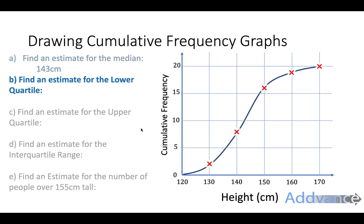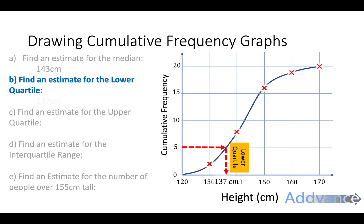For the lower quartile, that means the lower quarter. A quarter of 20 people is 5. So we go across from 5, then down, and read off the bottom. The number on the bottom is about 137 centimetres. This is an estimate because our curve is just a sketch, but this is a very good estimate for the lower quartile — 137 centimetres.